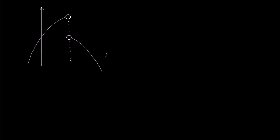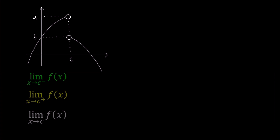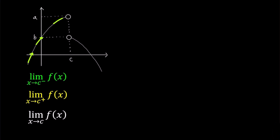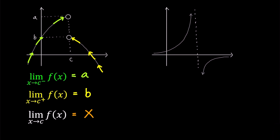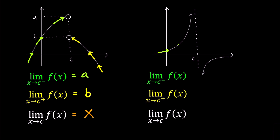Let's consider a slightly different graph. The left-hand limit approaches point A, however the right-hand limit approaches point B. Since the values of the left-hand limit and the right-hand limit are different, the limit of f does not exist as x approaches c. In another graph with a vertical asymptote, the left-hand limit goes toward positive infinity while the right-hand limit approaches negative infinity — therefore the limit does not exist.